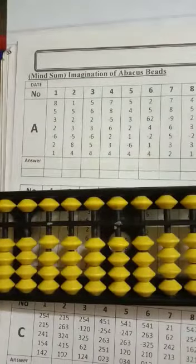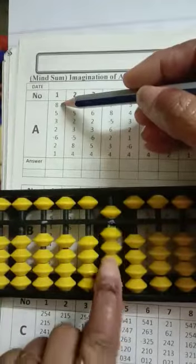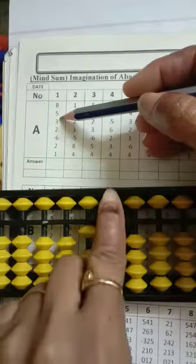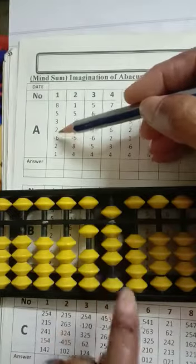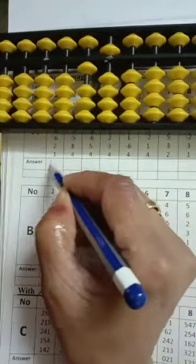So we have to start. Now 8, 5, 3, down add 5, then add 2, minus 6. Add 2, then add 1. Answer will be 50, so we have to write down 50.